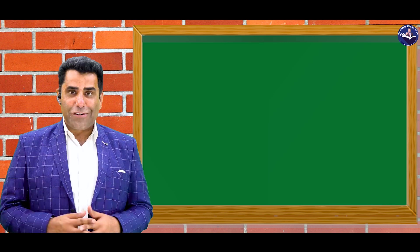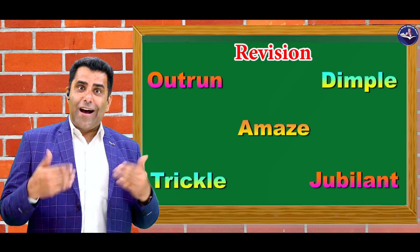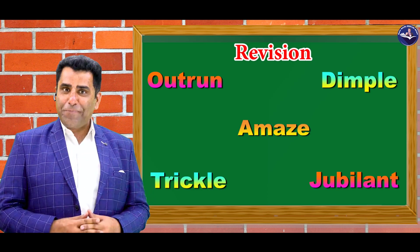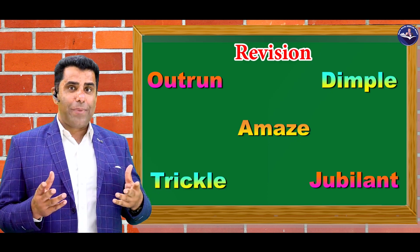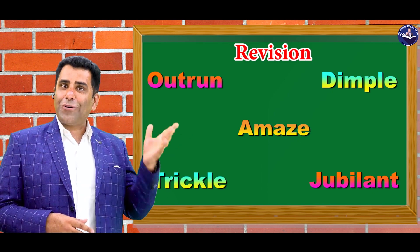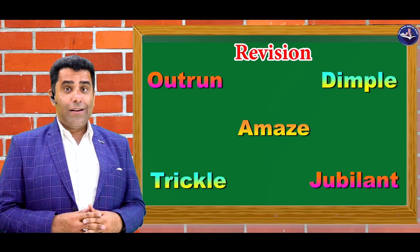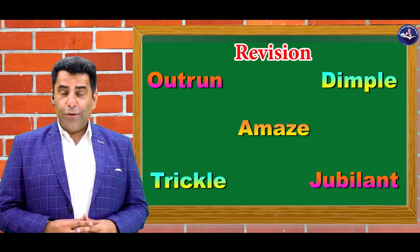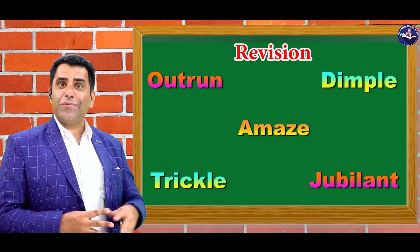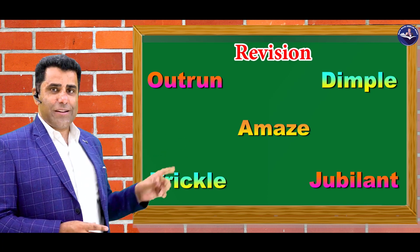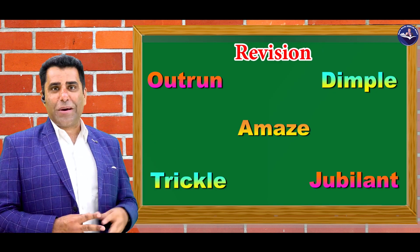So guys, now it's time for revision. Aaye panchon words ko revise kar lete hai. Sabse pehla humara word tha outrun — aagye nikal jana. Kaise yaad kiya? Outside se run karke. Next is dimple — gadda pad jana gaal mein. Dimple ke dimple ho gaya. Amaze — ascharya, chakit kar dena. Amaze car ne sabko amaze kar diya. Jubilant — bahot zyada khush hona. Silver jubilee humara link word tha. And the last word is trickle — boond boond karke tapakna. And Twinkle humara link word tha.